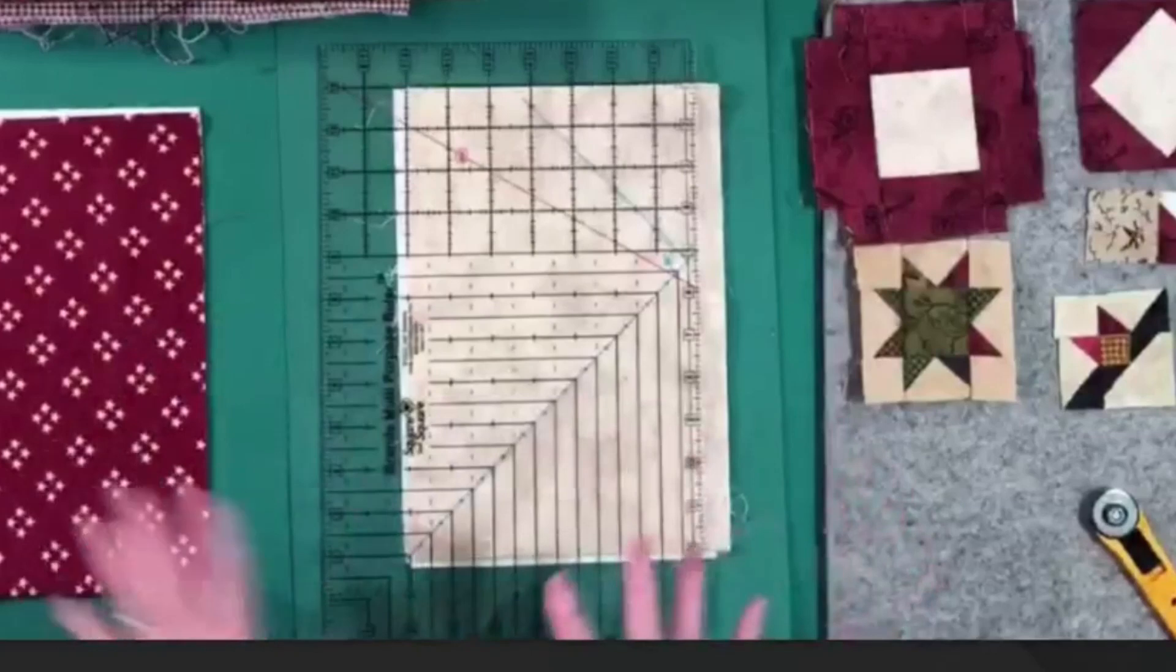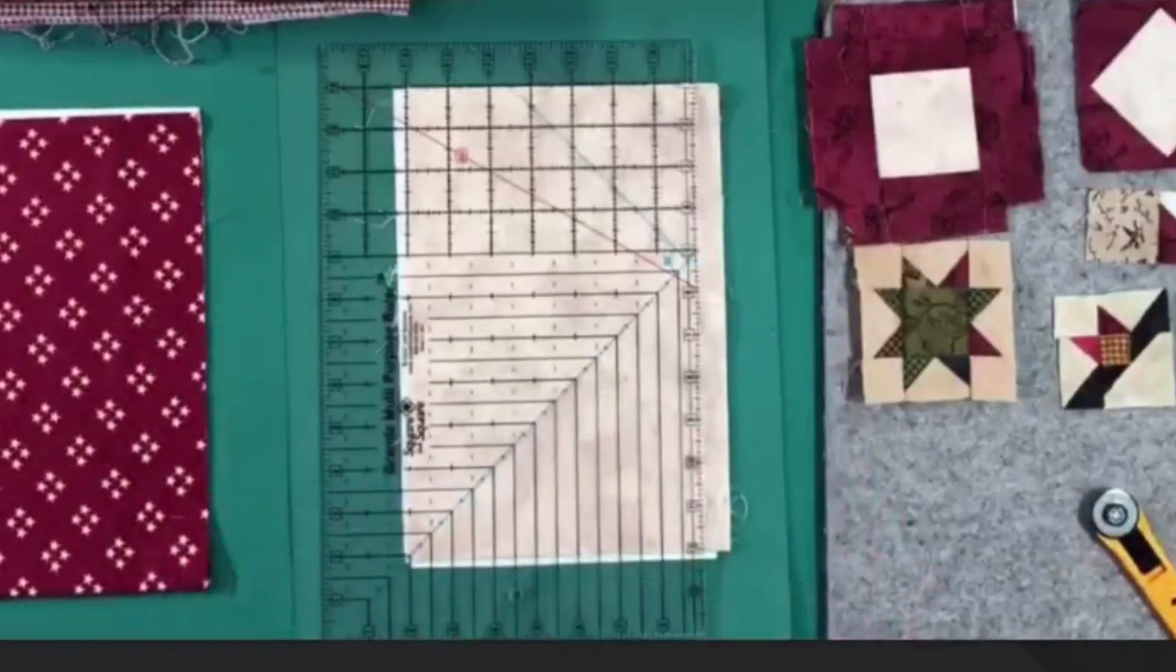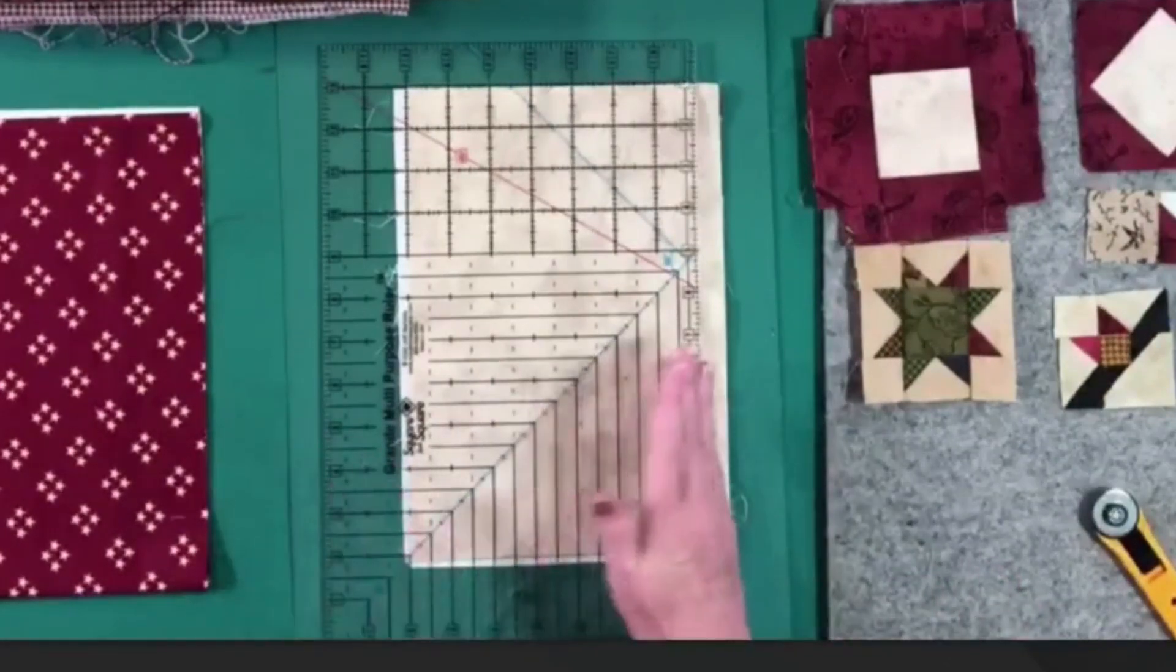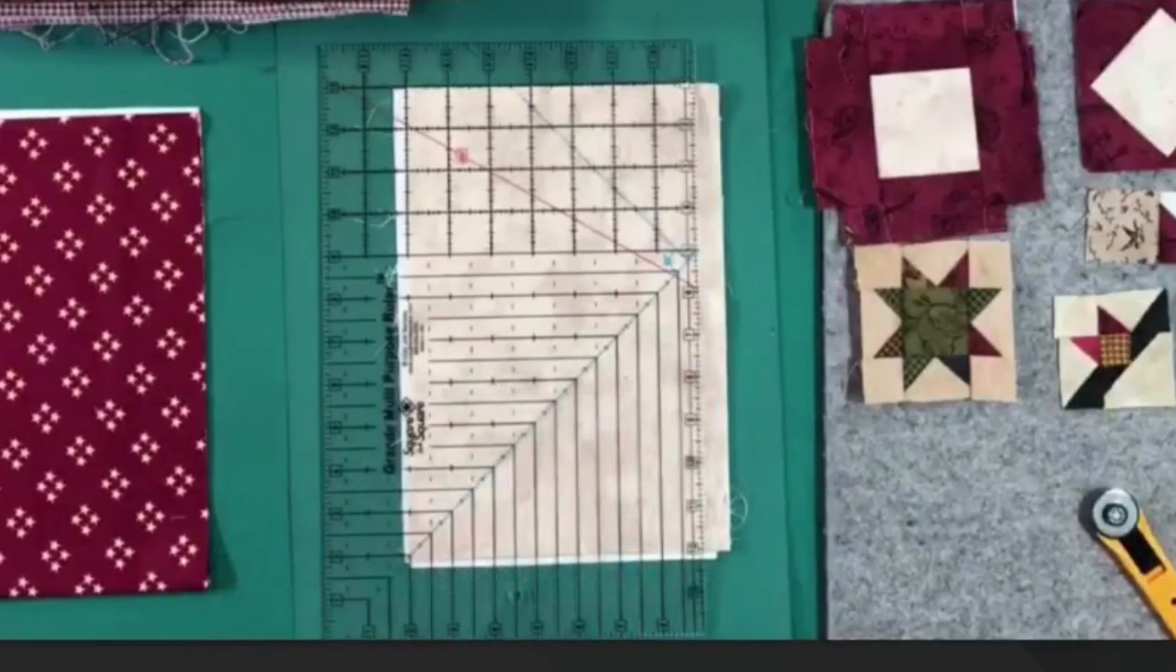I don't want all those other lines coming into my brain and coming into the focus of my eye. I want my cutting surface all one color so that I can focus on my fabric and focus on my ruler.